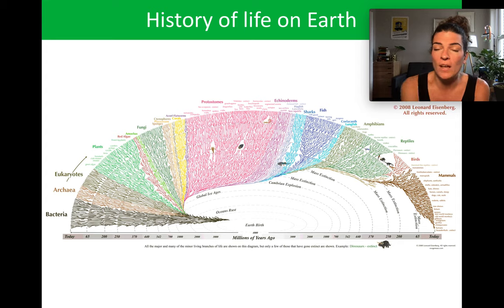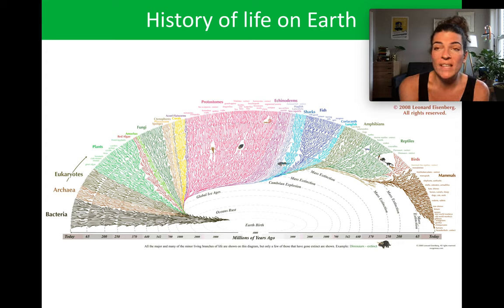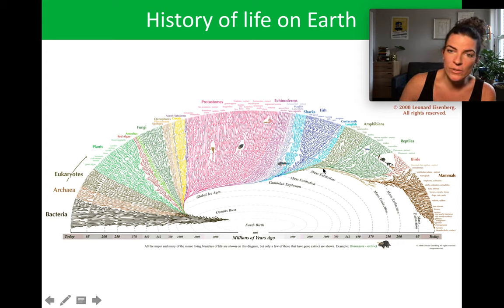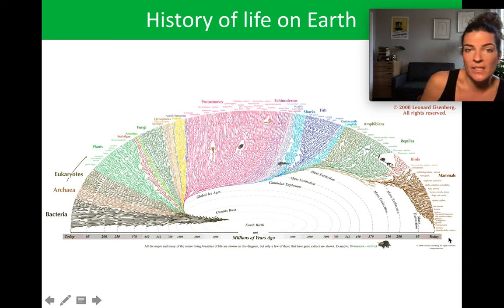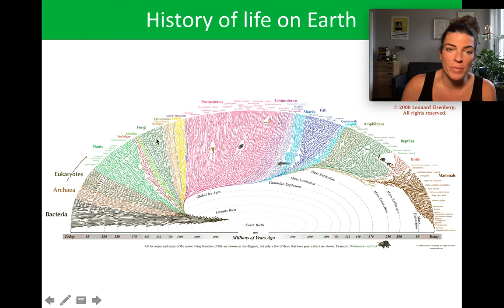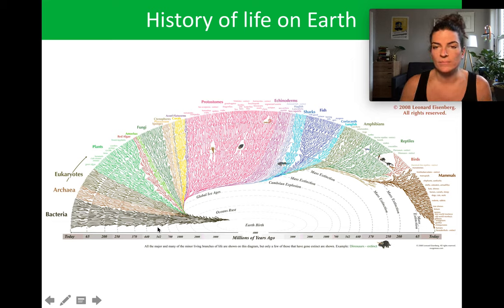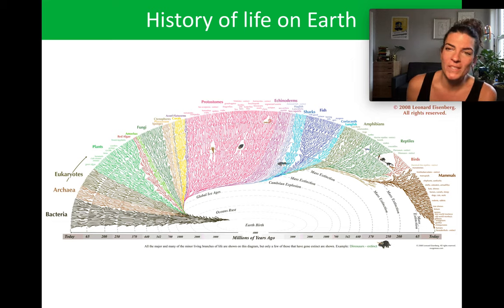Just eyeballing it, the number and diversity of organisms on Earth increased by about 5 to 10 times. And then it continues to explode to today, where the whole outer edge represents all the different species of organisms alive today. Compare this to just before the Cambrian Explosion, say 700 million years ago — it's significant.